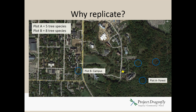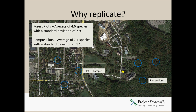So you need replication to tell you more about what's going on. If you had three plots in the campus and three in the forest, you can actually get an average or mean for each. Say your average is 4.6 species for the forest plots — and you can also get a sense of variation. Standard deviation can be calculated, which gives you a sense of the spread around those means. That starts to tell you a more complete story: campus plots actually had a higher average number of tree species than the forest, but with less variation — the standard deviation was lower.